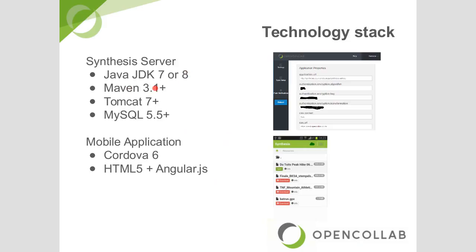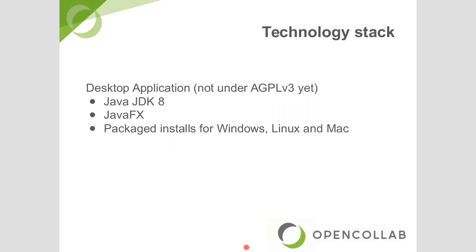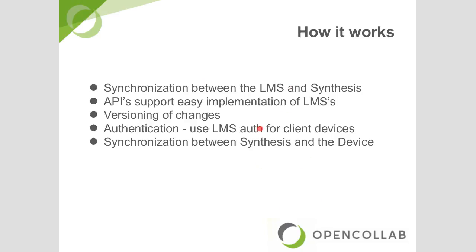On the technology stack: the Synthesis server synchronization engine is built on Java JDK 7 and 8, using Maven 3+, Tomcat 7+, and MySQL 5+ — essentially the same stack as Sakai itself. The mobile application was built with Cordova 6, with Angular JS and HTML5 on the front end. The desktop application uses Java JDK 8 and JavaFX, packaged to install on Windows, Linux, and Mac. It is intended to be released under AGPL3.